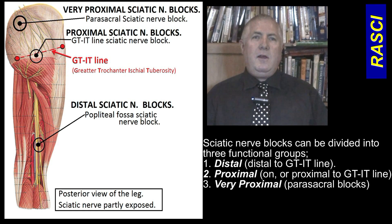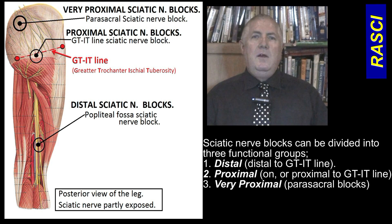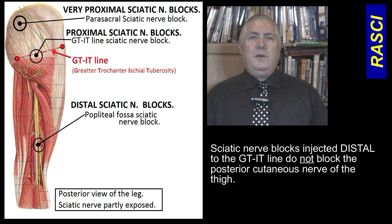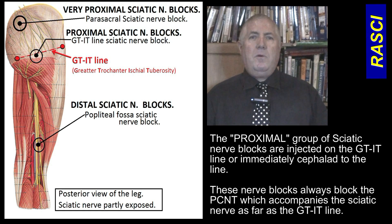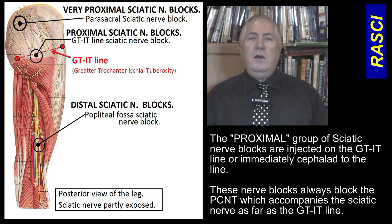There are, however, only three groups of sciatic nerve blocks based upon the accompanying nerves that get blocked with the sciatic nerve. The first group are the distal sciatic nerve blocks, which all exclude blocking the posterior cutaneous nerve of the thigh. The second group are proximal sciatic nerve blocks performed at the GT-IT line or slightly proximal to that.